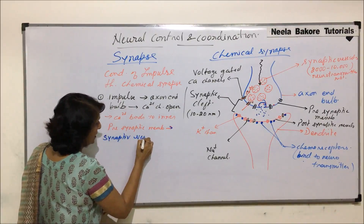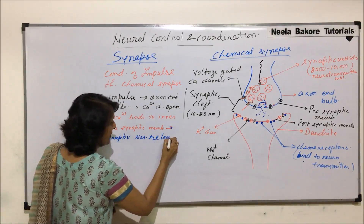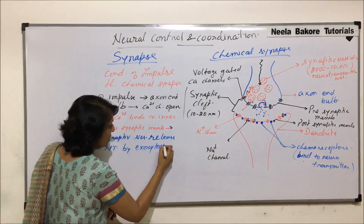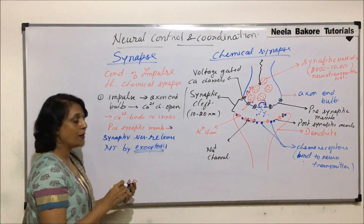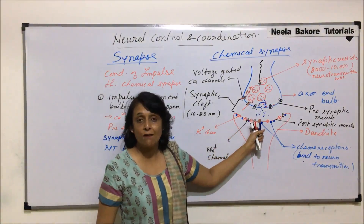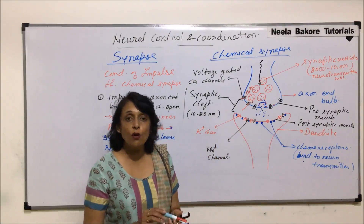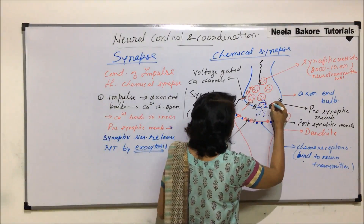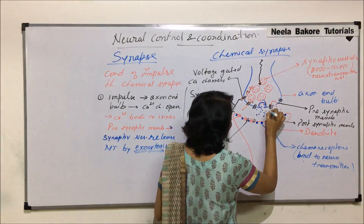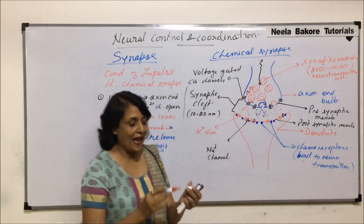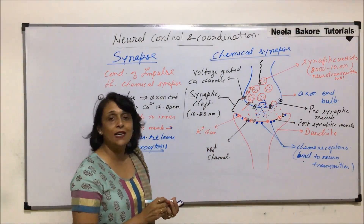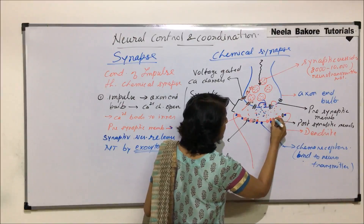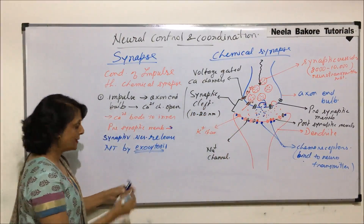The synaptic vesicles come to the membrane and release the neurotransmitter — it ruptures and the neurotransmitter is released. The process by which the chemical is released into the synaptic cleft is called exocytosis. The neurotransmitter-containing vesicle releases the neurotransmitters into the cleft.